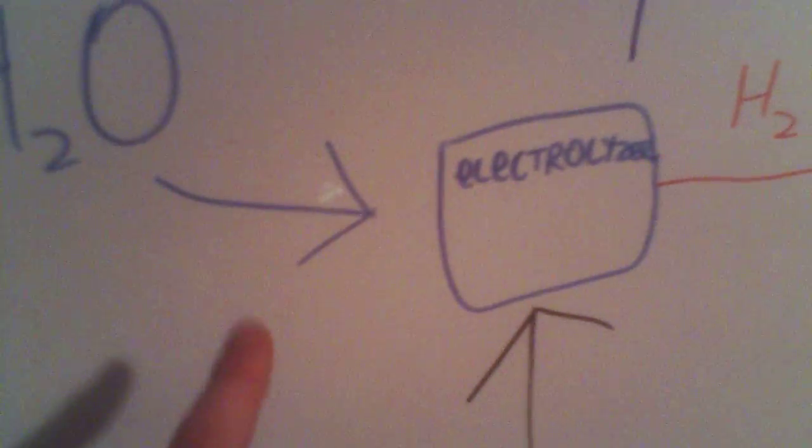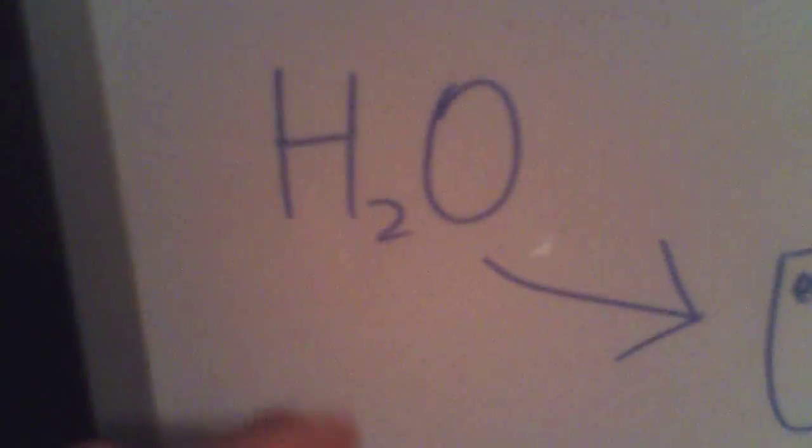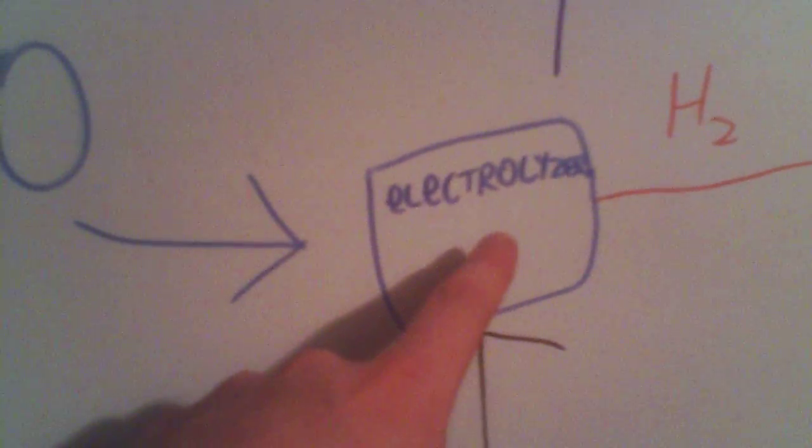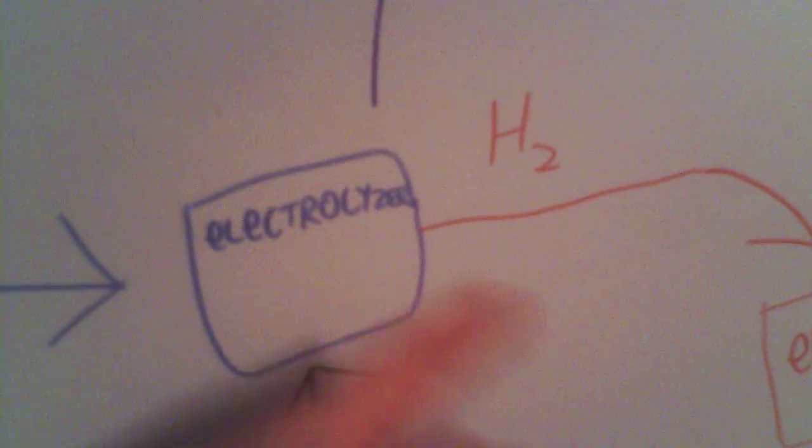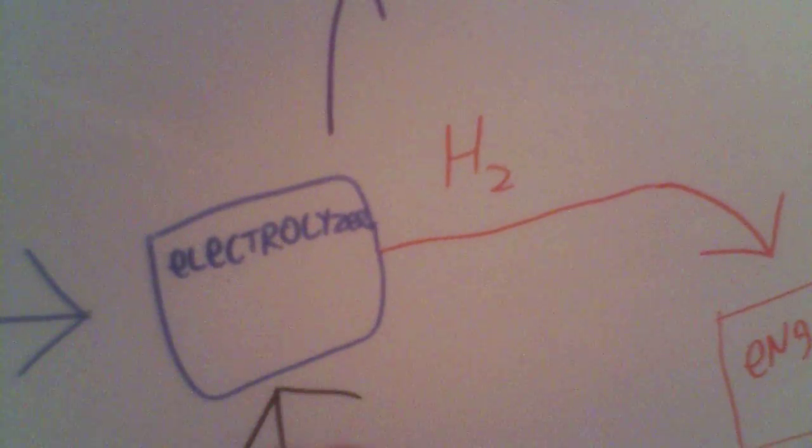This is the video on why HHO is impossible. The basic HHO cycle that you'll see to promote this crap is that water is taken, run through an electrolyzer which splits into hydrogen and oxygen. The hydrogen goes off in the case of this simplified vehicle system to run an engine.